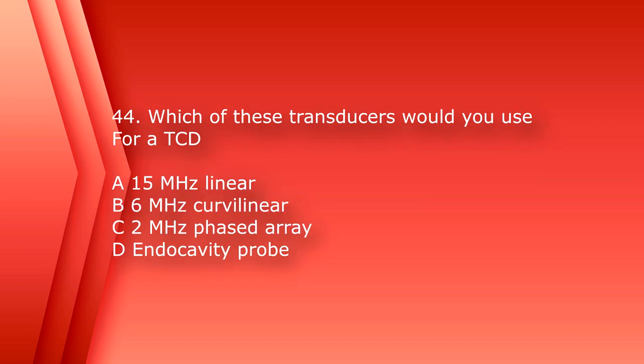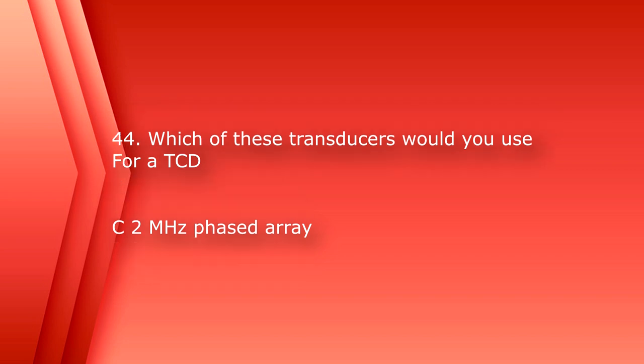Number 44: which of these transducers would you use for a transcranial Doppler? A. 15 MHz linear, B. 6 MHz curvilinear, C. 2 MHz phased array, or D. Endocavity probe. The answer is C, 2 MHz phased array transducer.